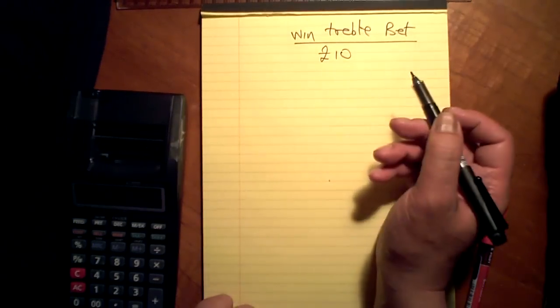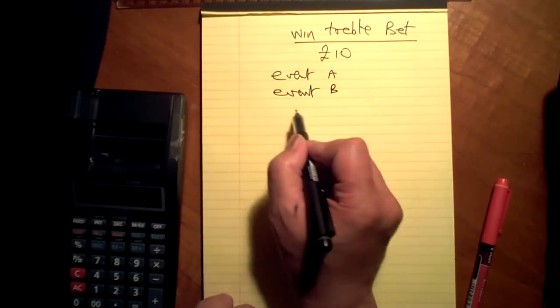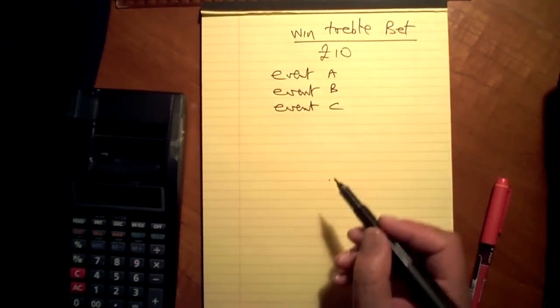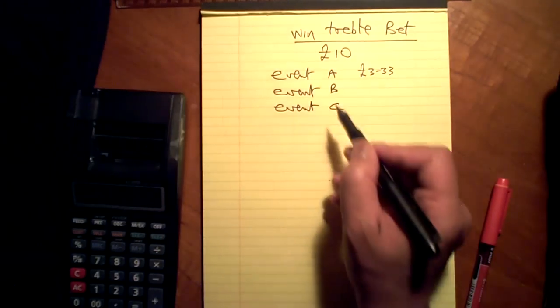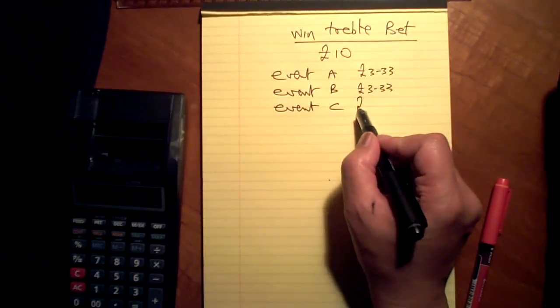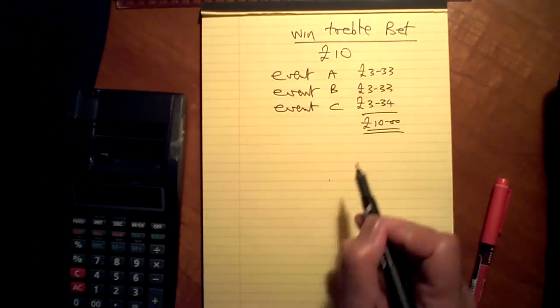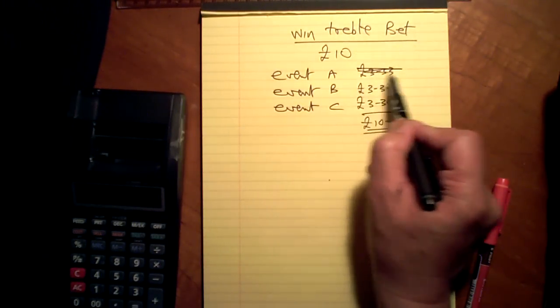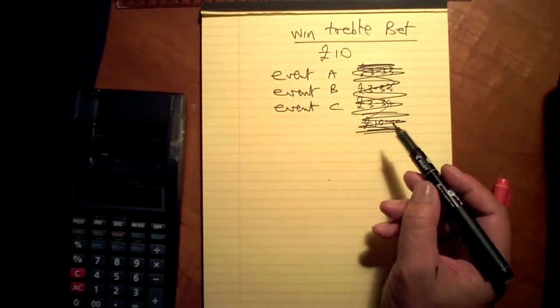My ten pounds on event A, event B, event C. Ten pounds on all three. I don't mean to say £3.33 on that, £3.33 on that, £3.34 on that. That is not what I mean. What I mean is £10 on that, that, that.